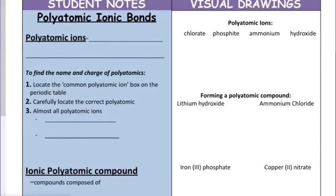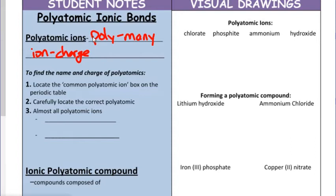This is our last set of video notes in the series of naming ionic compounds, and this incorporates what we refer to as a polyatomic ion. If we break that word down: poly means many, atomic means atom, and ion means that particular group still has an overall charge. So we're just looking at groupings of elements that, when bonded together, have a unique enough name to indicate that particular group.